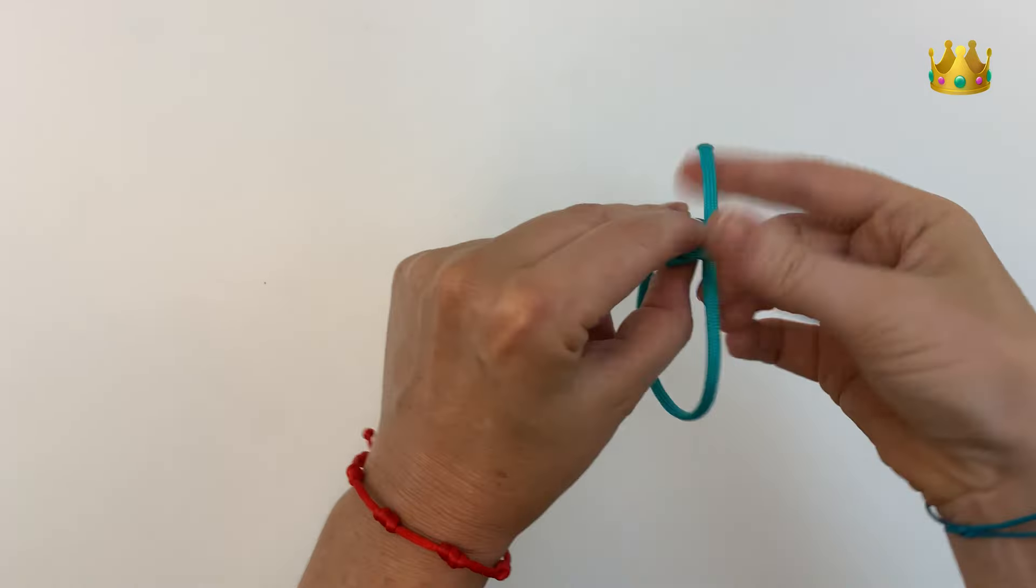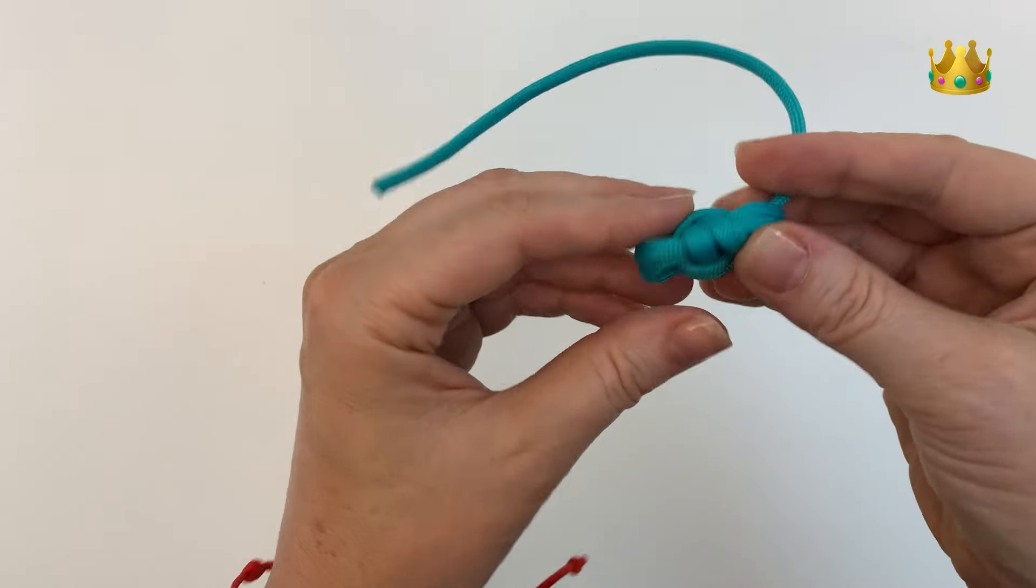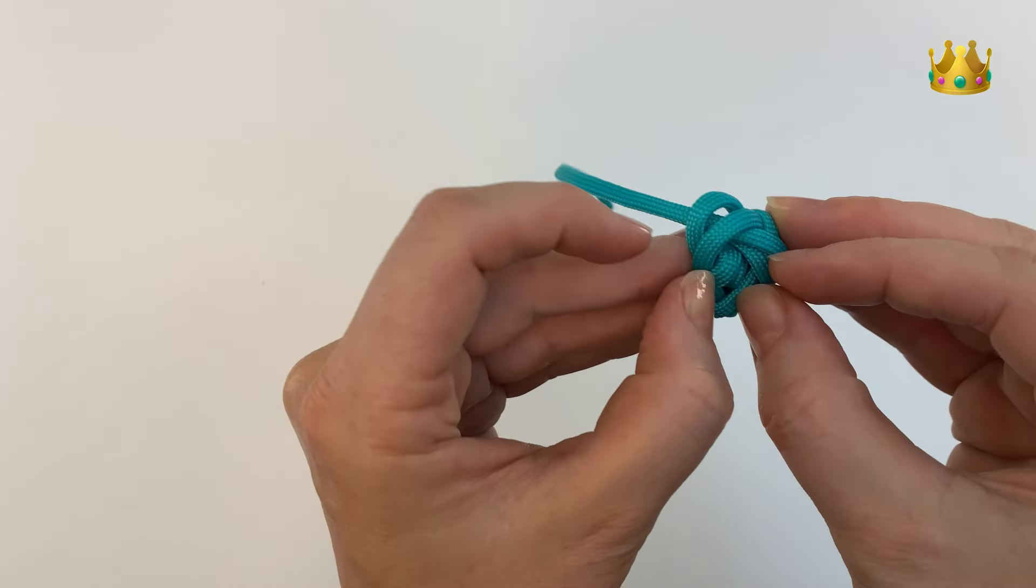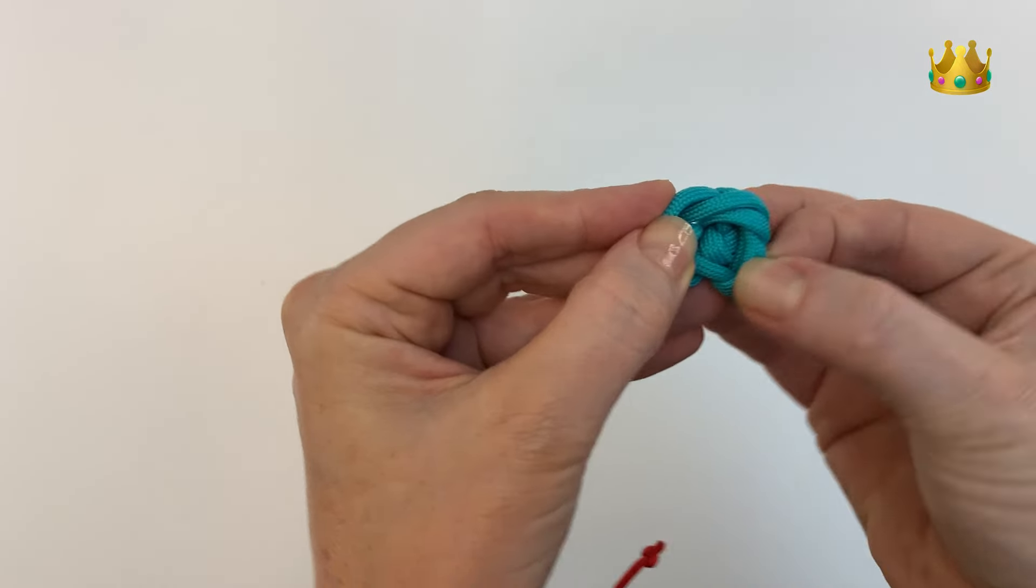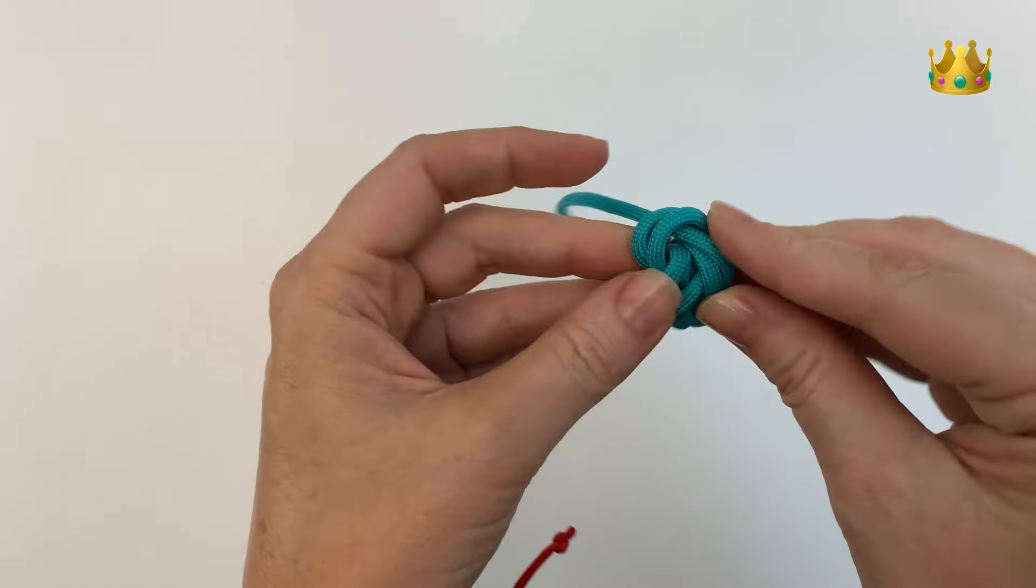Now that is already a complete monkey fist knot. All that's left is to tighten it up. I find it's helpful to find that knot on the end of your cord in the center and work your way out from there.